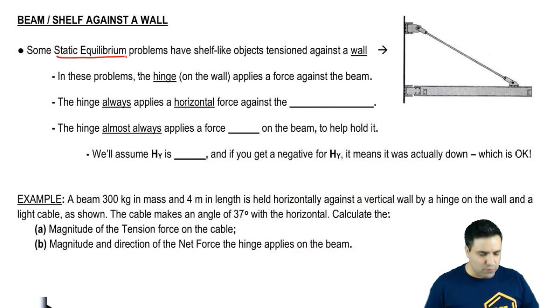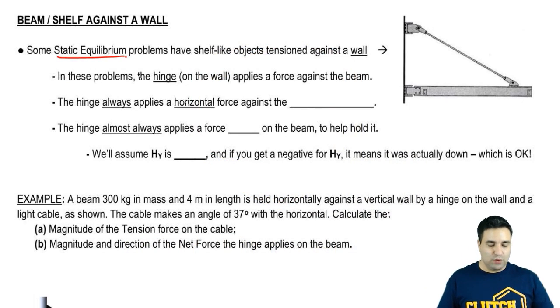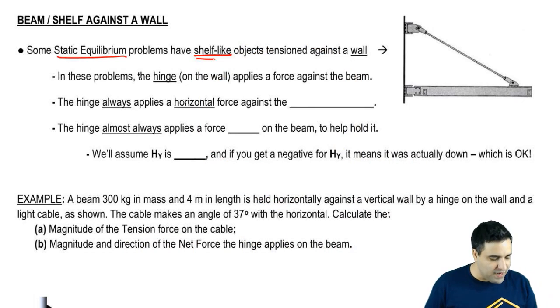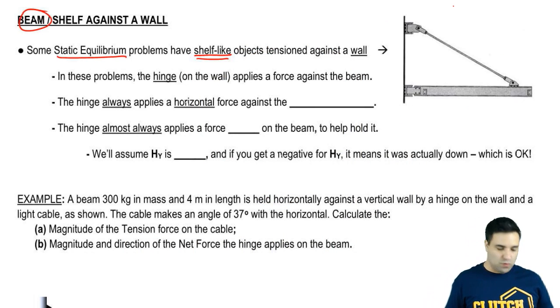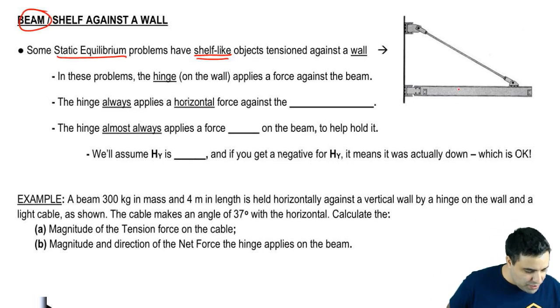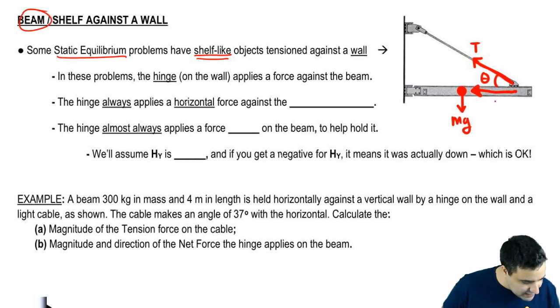In some static equilibrium or complete equilibrium problems, we'll have shelf-like or beam-like objects being held against the wall, tension against the wall, like this. First force I'm going to draw here is the mass of the beam, which will happen in the middle. There is a tension here, T. It's at an angle theta. So we decompose this tension into Tx and Ty.